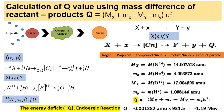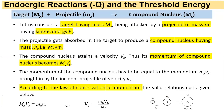For an endoergic reaction, the projectile must carry some additional energy to complete the nuclear reaction, and this is called the threshold energy. Now we define what threshold energy is and how to calculate it. The target has mass M_x, and it is attacked by the projectile having mass m_x, with kinetic energy E_x. The target is at rest and does not have kinetic energy.